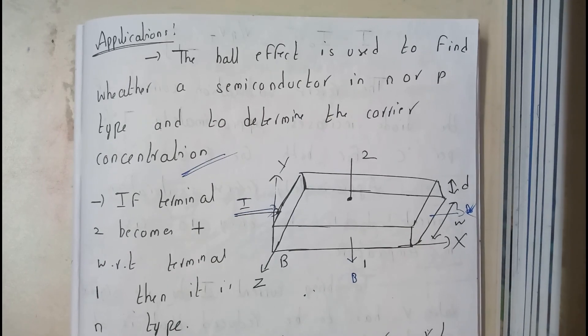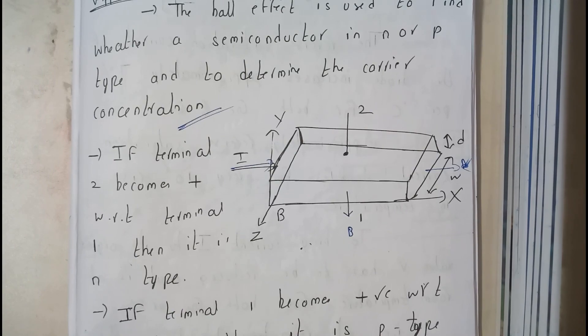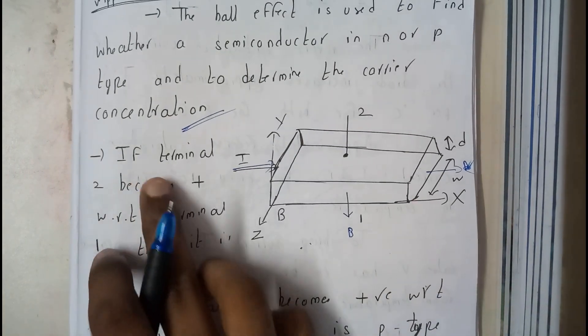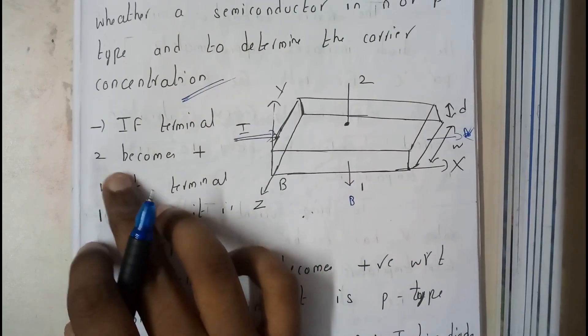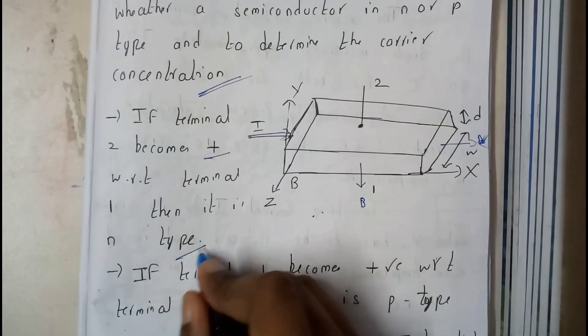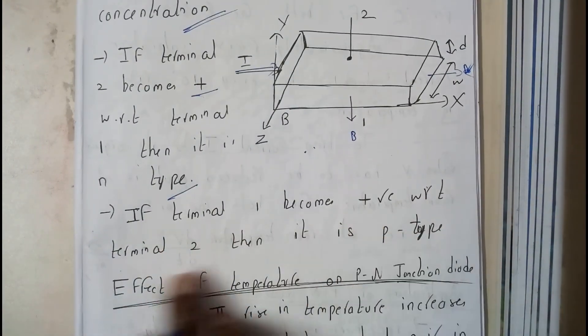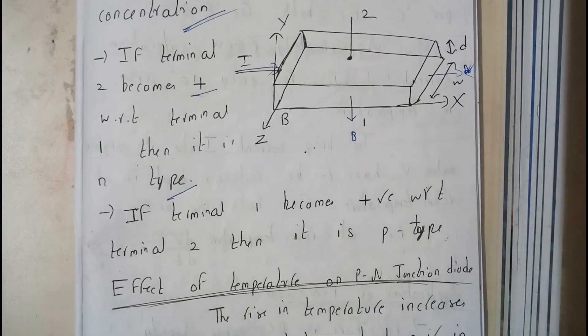Now let us go further in depth. How can we identify? If terminal 2 becomes positive with respect to terminal 1, then it is N type. And if terminal 1 becomes positive with respect to terminal 2, then it is P type. That's all about the Hall effect.